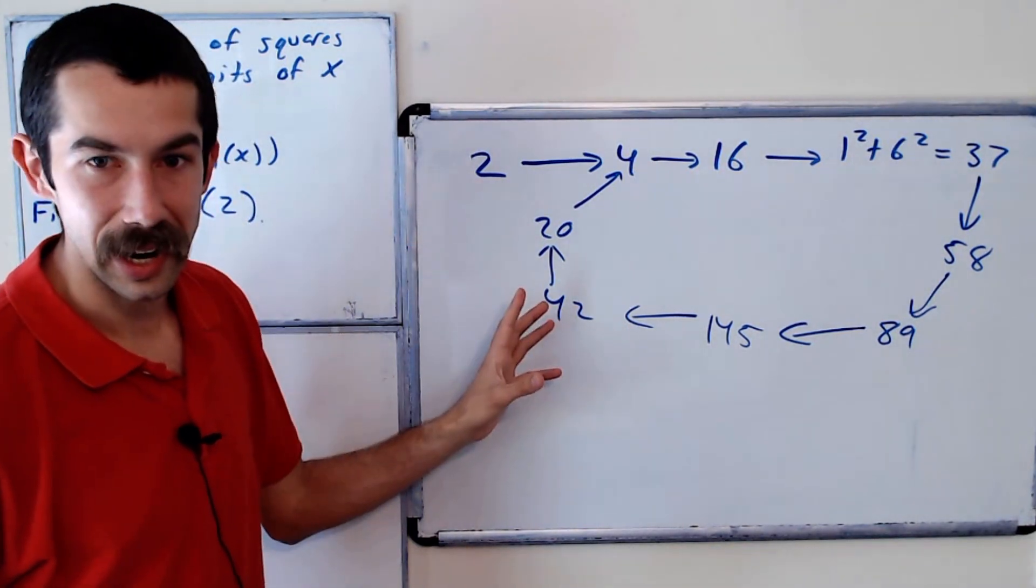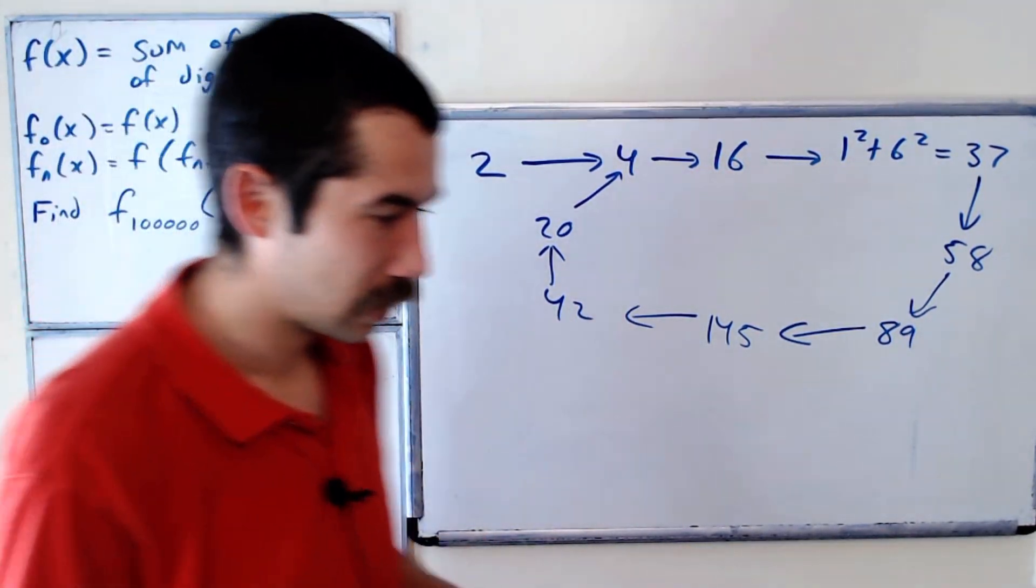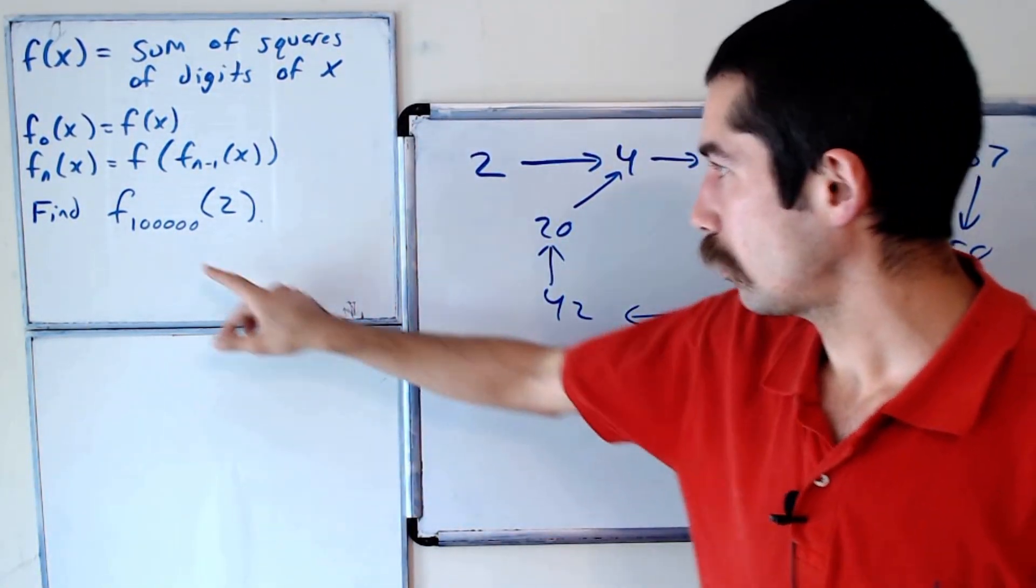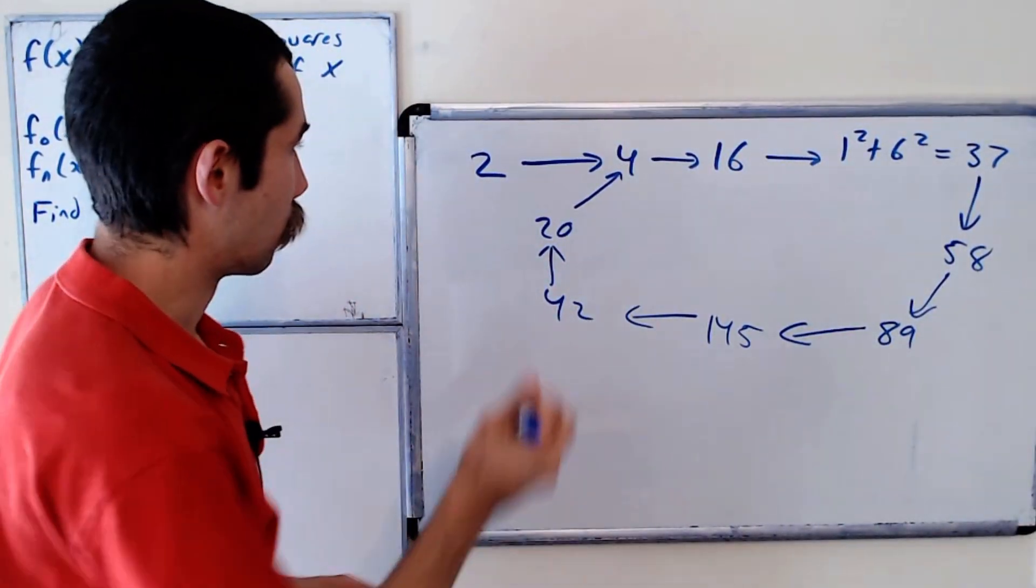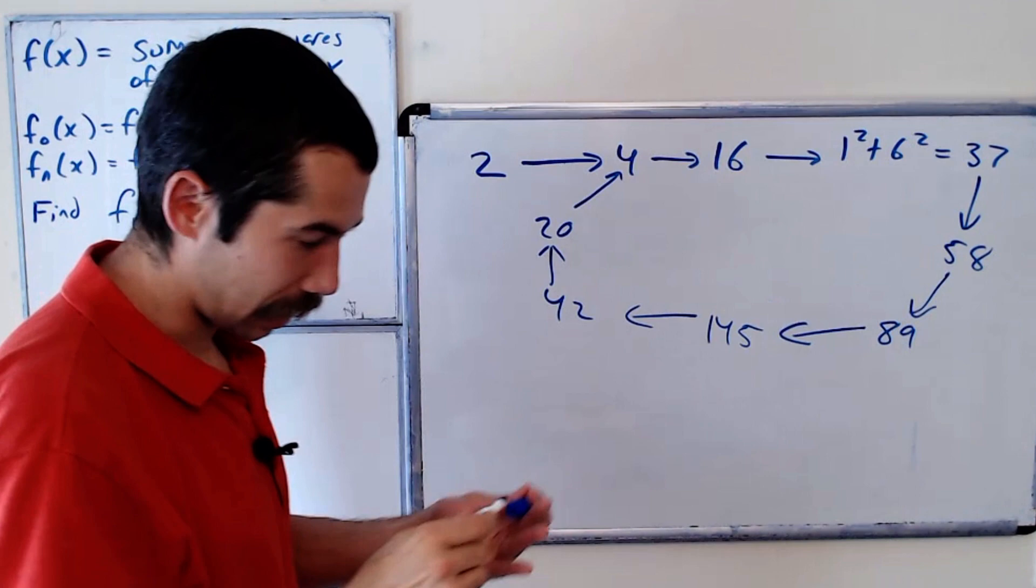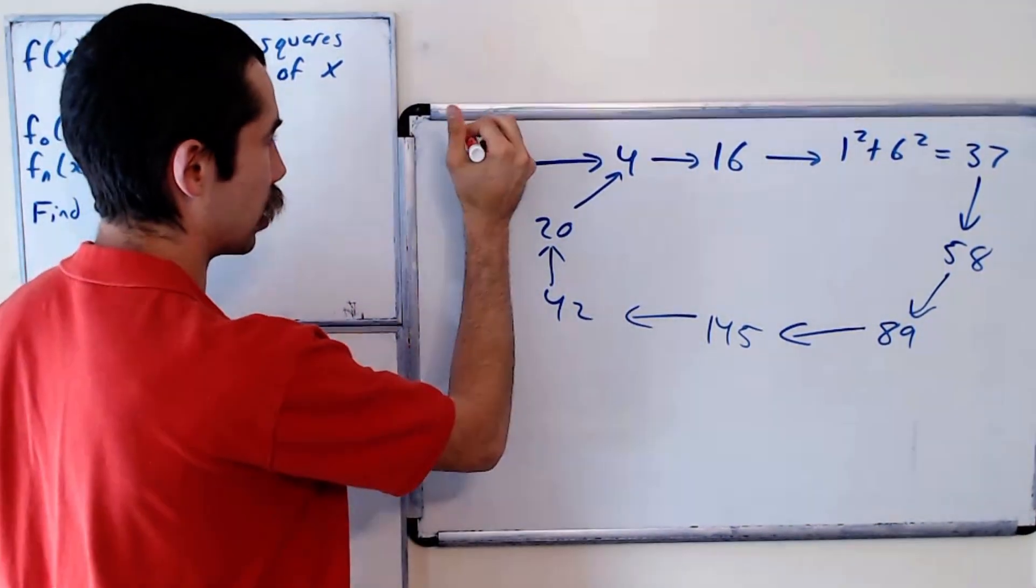And so we're going to use this to answer the question. We want to find the 100,000th term in this sequence. So this first term here, I guess I'll write it in a different color so it's not confusing. This is the 0th term.